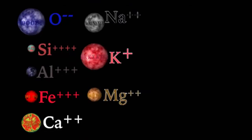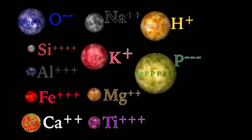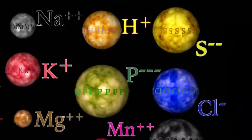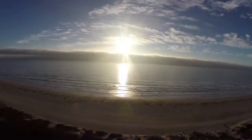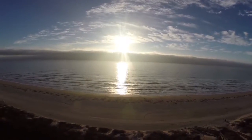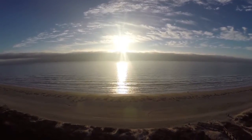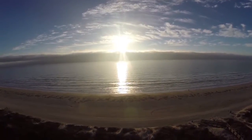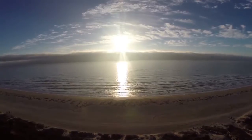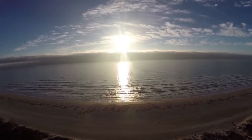Welcome back mineralogy fans. Sulfur may be the unlucky 13th most common element in the crust, but in the oceans it accumulates, and after sodium and chloride, sulfate is the most abundant dissolved solid in the surface oceans.